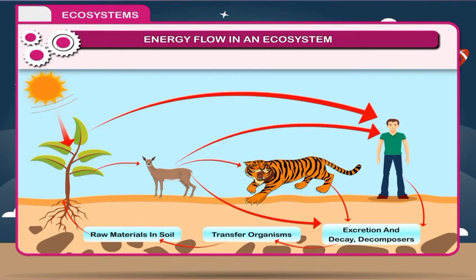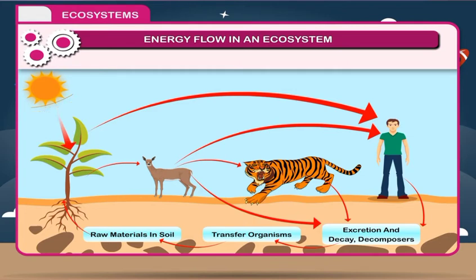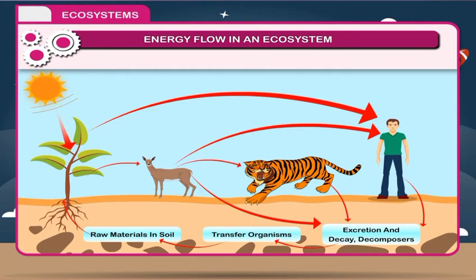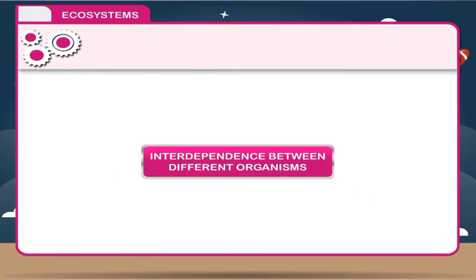All food chains are interconnected with each other and form a food web. A food web is a set of interconnected food chains circulating energy in the ecosystem. When we arrange the food web according to different levels, it will form the shape of a pyramid.